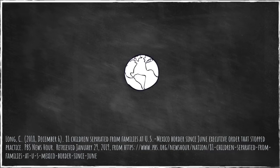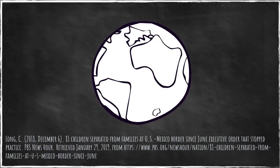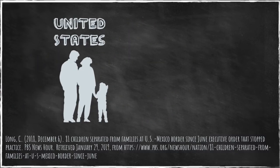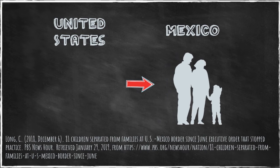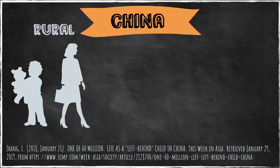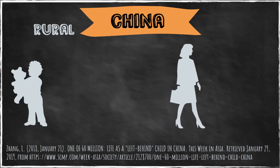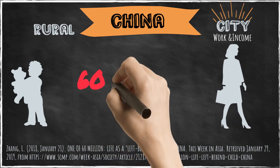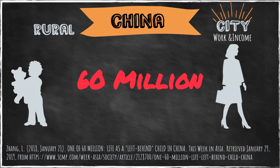It is important to acknowledge that external factors can play a large role in the development of child-caregiver attachments. For example, the mass deportation of Mexican immigrant families from the U.S. in May and June of 2018 resulted in more than 2,400 children being separated from their caregivers. Another example is the necessity of impoverished families living in rural China to send parents to cities where work and income are available, leaving a staggering 60 million children at home without a reliable caregiver to help them develop secure attachment.